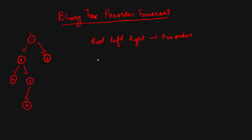For pre-order traversal, first I will print my root, then its left subtree. For the left subtree, first I print 2, then its left child 4. There is no left or right subtree for 4, so I go back. I've printed root 1, then 2, then 4. For node 2's right, I print 5, then its left child 6. Node 2's root, left, and right are all done. Now I go to the right subtree of root, which is 3.